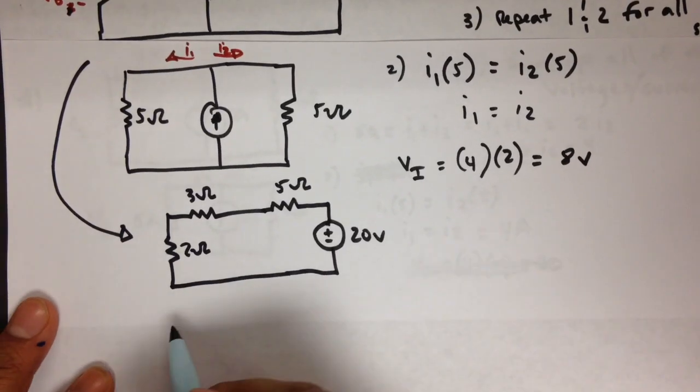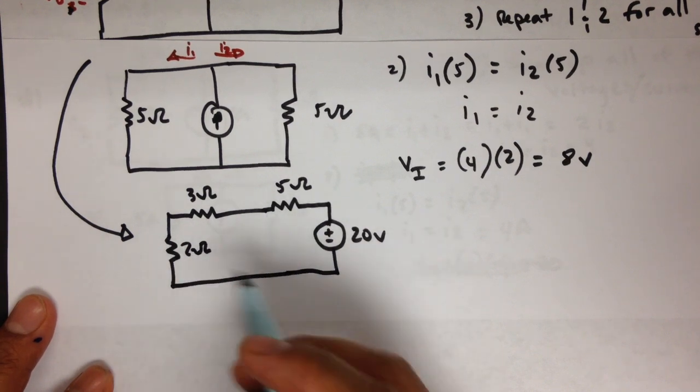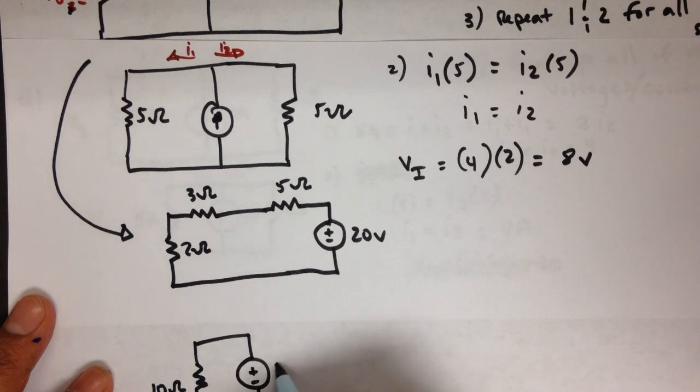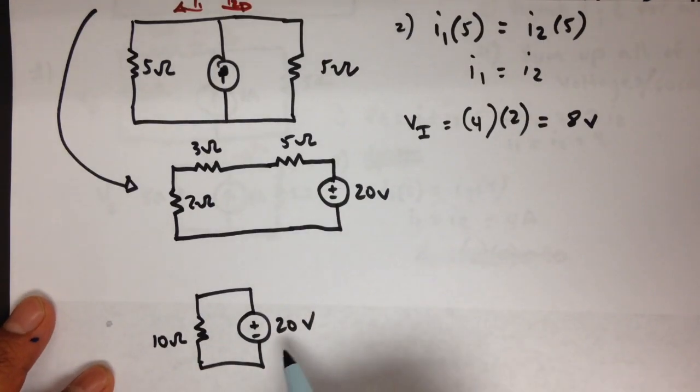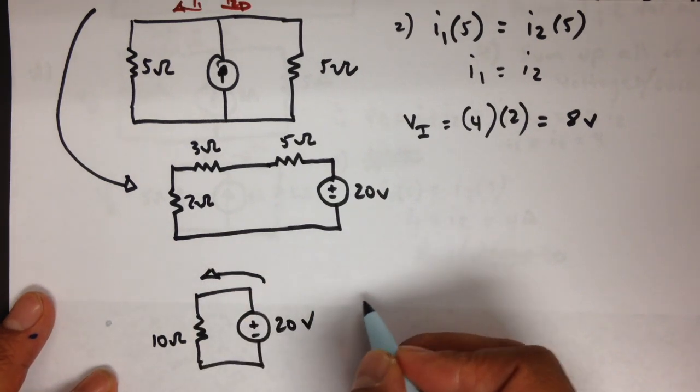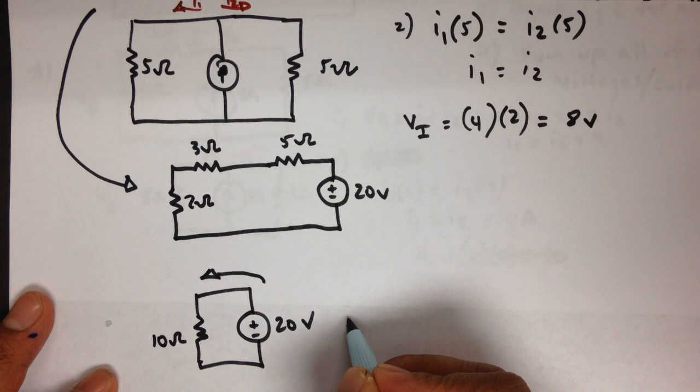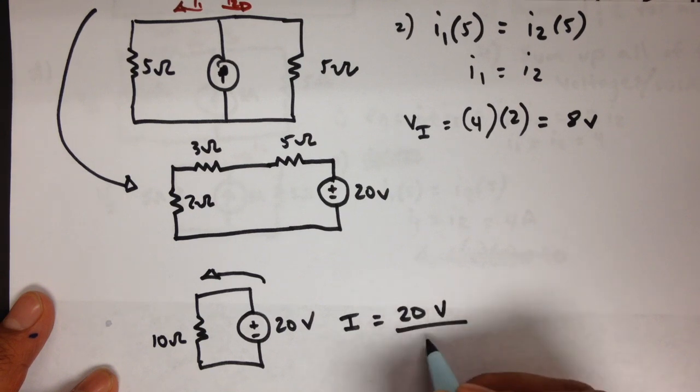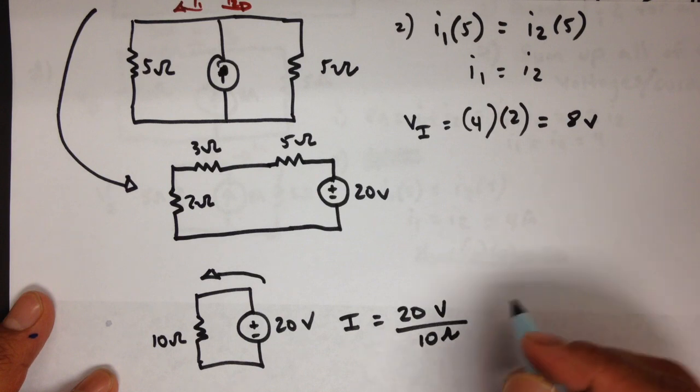All righty. Well, in order to find that current, we can just simplify the circuit. So let's put it down here. They're all in series, right? So we can just add them all up. So we can convert that into a 10 ohm resistor with a power supply of 20 volts. Okay, so what's this current? Well, use Ohm's law. V equals IR. So that then means I equals V, which is our 20 volts, divided by 10 ohms. That should then give you 2 amps.